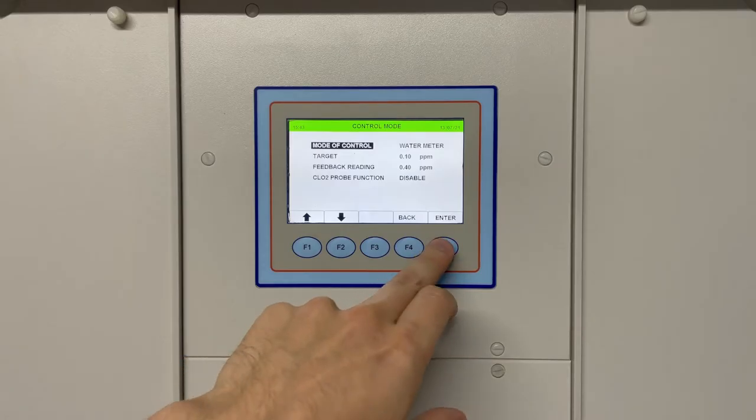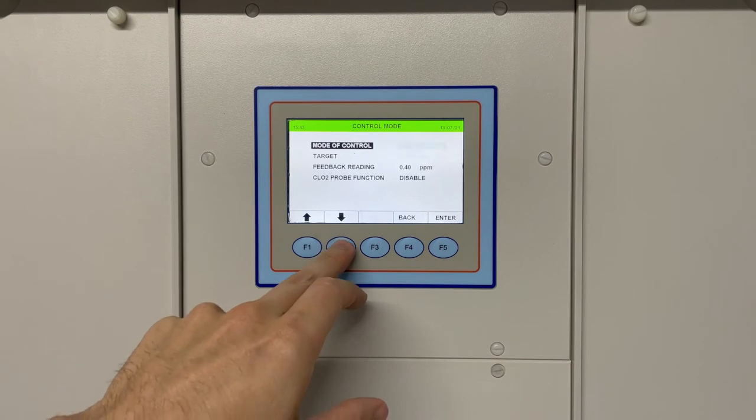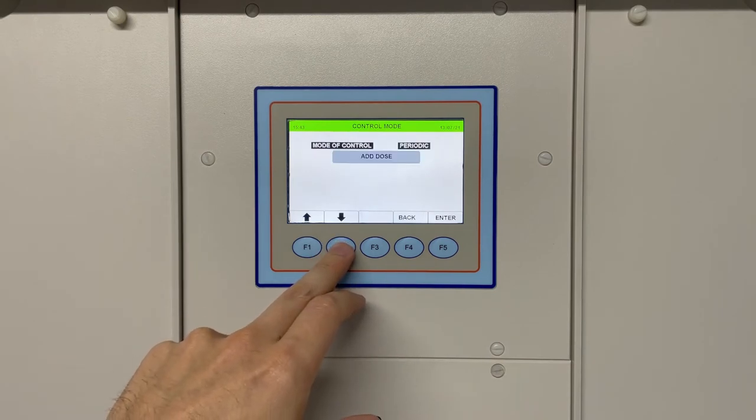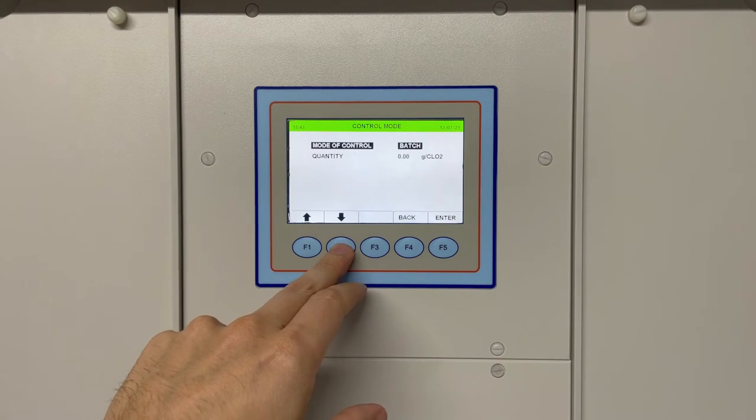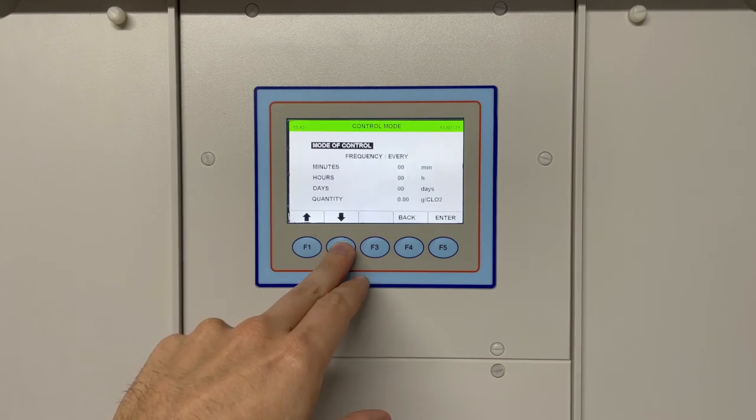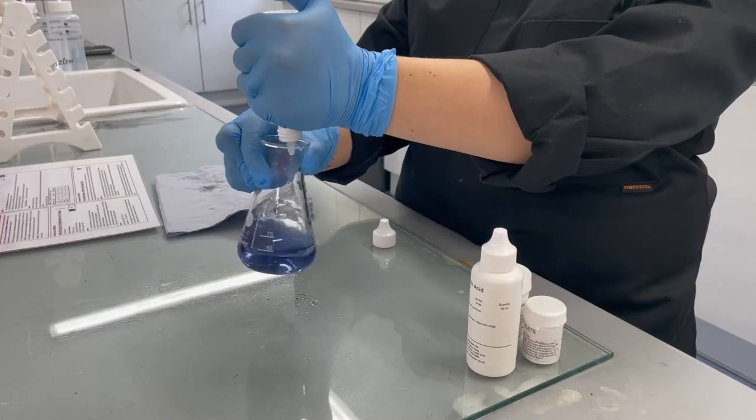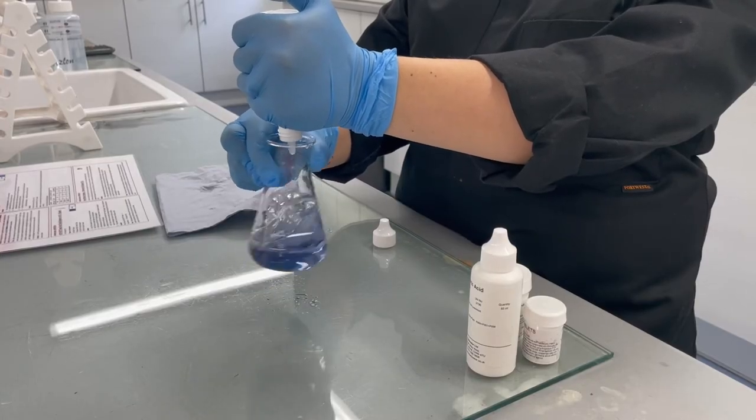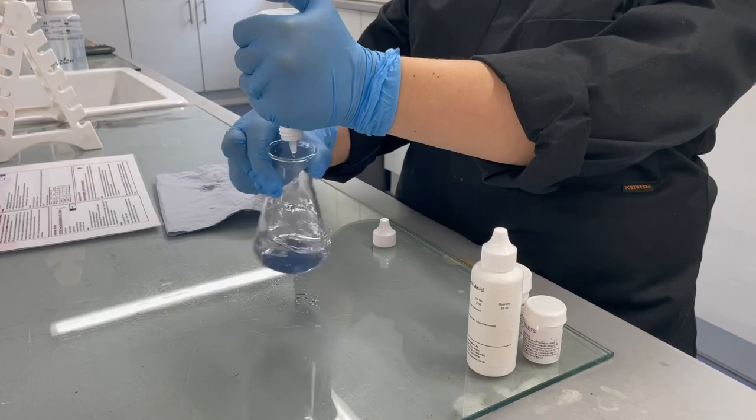As well as this, there are now four other main control modes including periodic, where dosage is pre-programmed to a set specification; batch, where an external signal triggers a predefined dosage; remote start, which is controlled via an external signal; or timer mode, which is controlled by the internal clock. The chlorine dioxide can be measured at the point of use using a simple test kit and the dosage rate adjusted accordingly.